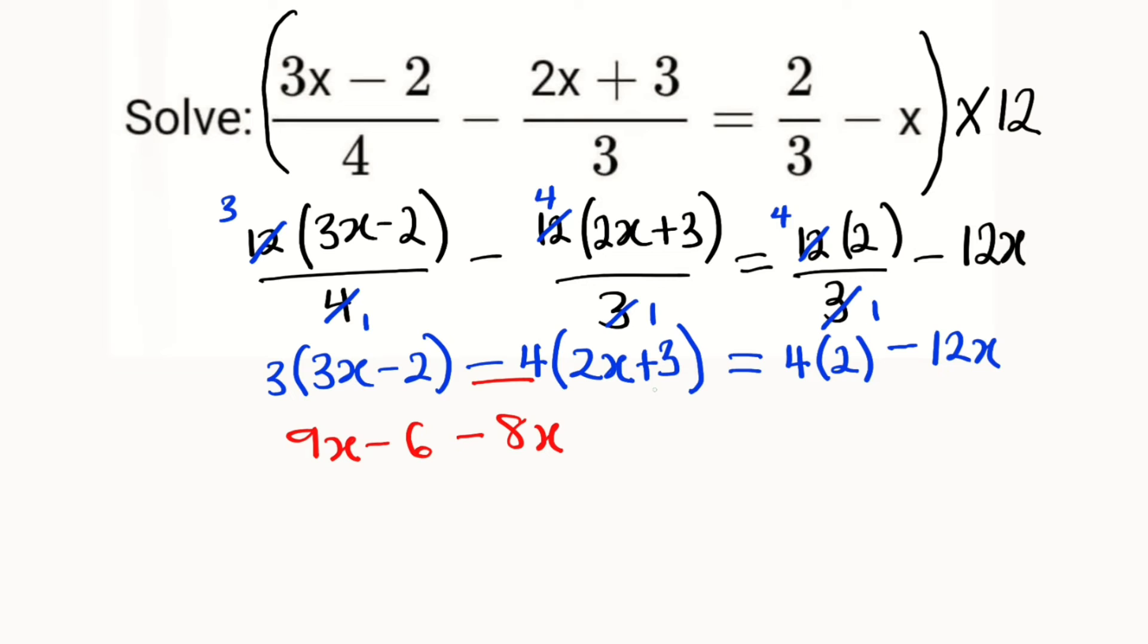Negative 4 multiplied by 3 is negative 12. On the right, 4 multiplied by 2 is 8, minus 12x. So we have 9x minus 6, minus 8x minus 12, equals 8 minus 12x.